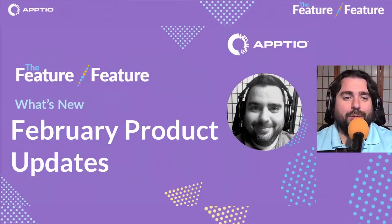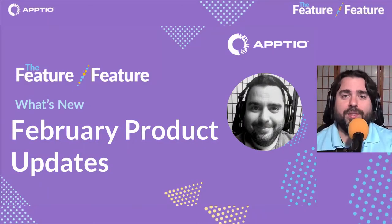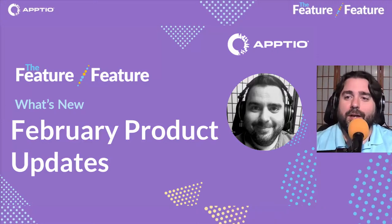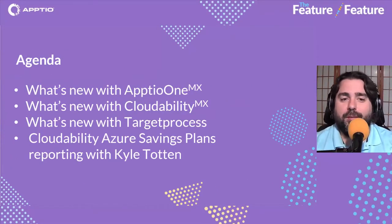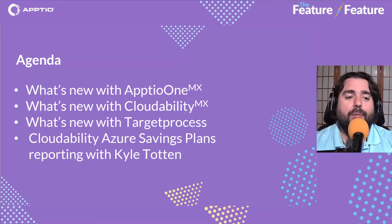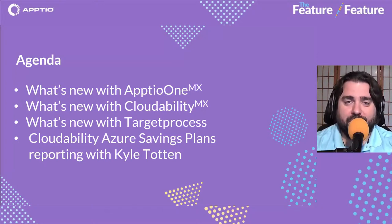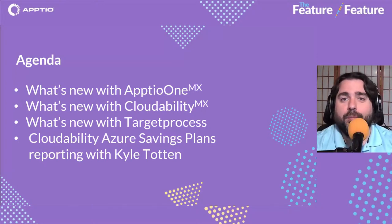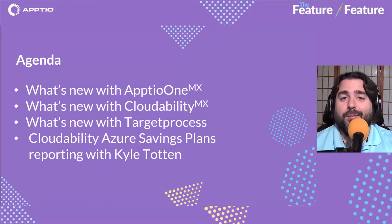My name is Hunter Willis — welcome to the Feature Feature, our monthly series for Aptio where we talk about what's new and what's coming with our products. We're going to dive right into the agenda, talking about Aptio One, Cloudability, and Target Process today. We have Azure savings plans reporting with Kyle Totten, senior product manager with Cloudability, diving into new features in Cloudability reporting with support for Azure savings plans.